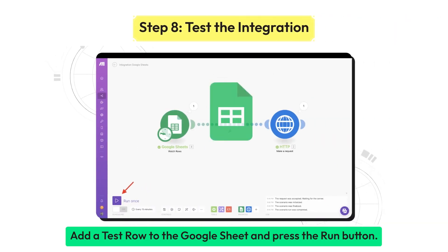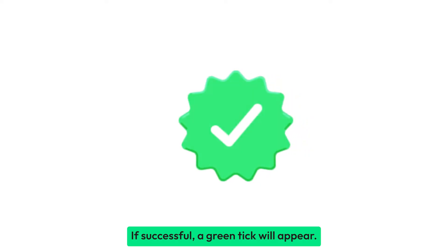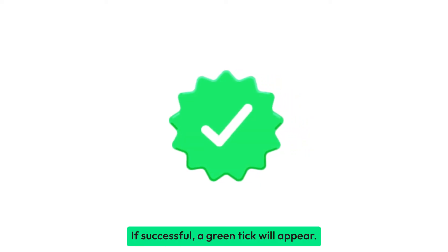Add a test row to the Google Sheet and press the Run button. If successful, a green tick will appear. That was it.